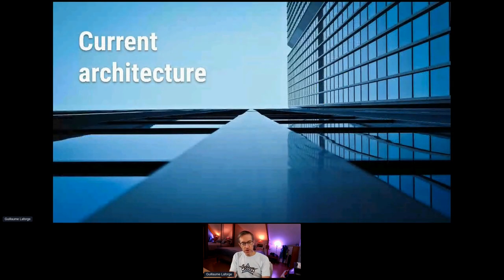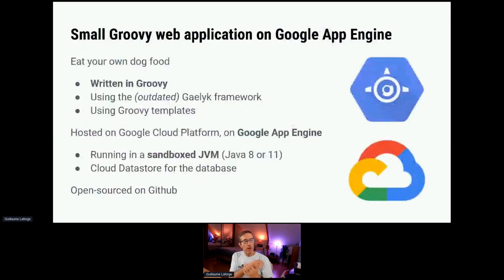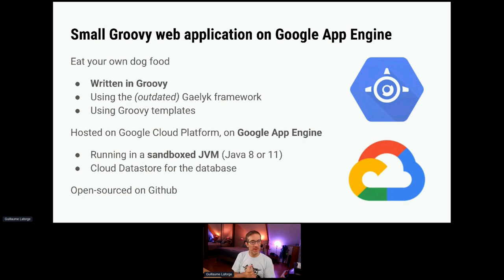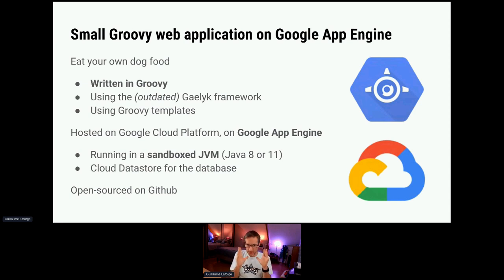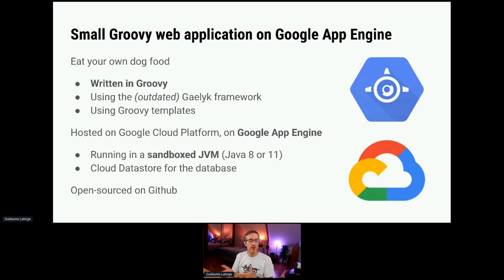The current architecture of the Groovy web console: it's written in Groovy. It's using the outdated and not-maintained Gaelic framework, which I created with Kunal and other contributors like Vladimir. It was a little framework on top of the Java SDK for Google App Engine — really specific to App Engine with some nice shortcuts. For the view, we're using the built-in templating feature of Groovy.